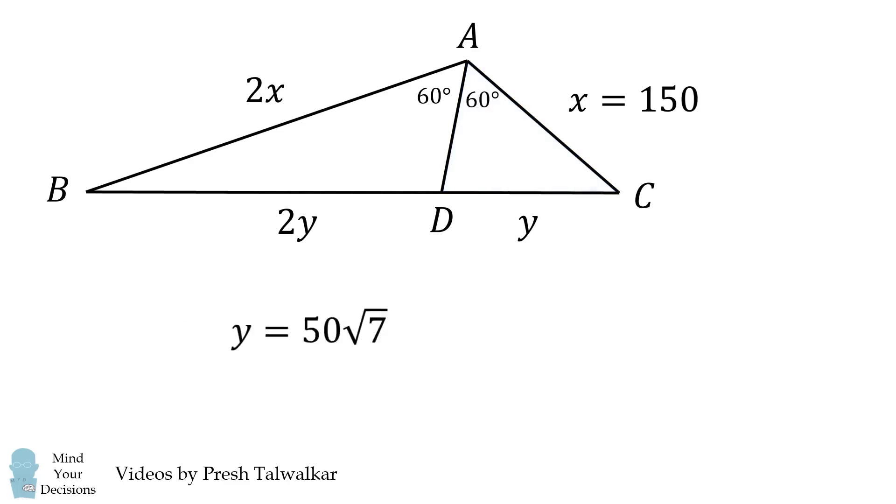Now recall we want to solve for BC, and BC is equal to 3y, so we get 150 times the square root of 7. And that's our answer.